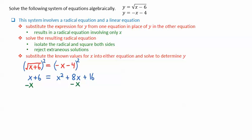Subtracting x from both sides, and then subtracting 6 from both sides. Note we want to get 0 on the left side of this quadratic equation. We then get 0 equals x squared plus 7x plus 10.